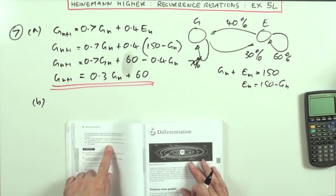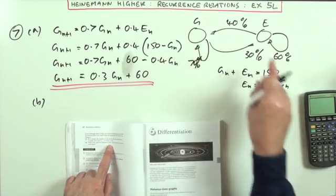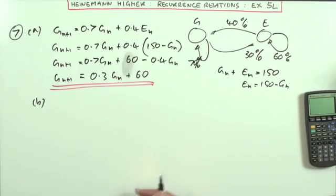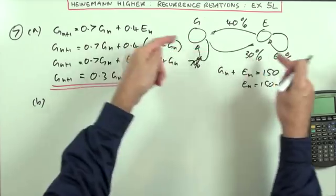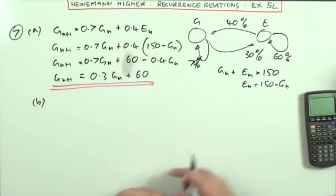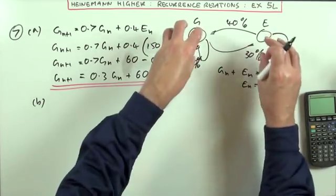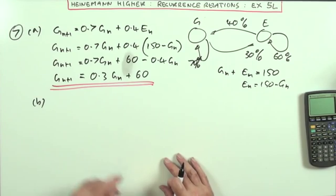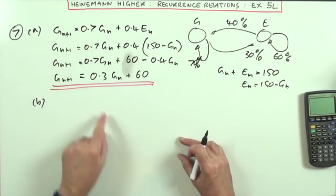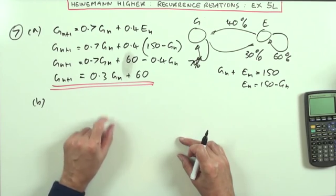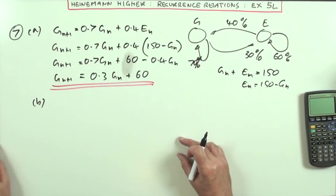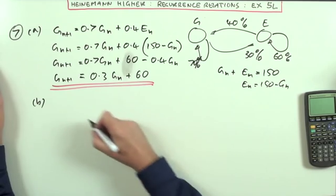Part B. What's the optimum number of cars that you should keep in each of the depots? Because once all this shuffling back and forth has settled down a bit, then you'll end up more or less with the same number of cars each week in each of those places. You know that because there's a limit here. This recurrence relation has got a proper fraction as its coefficient.